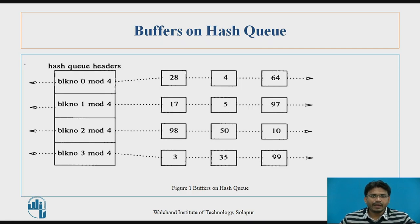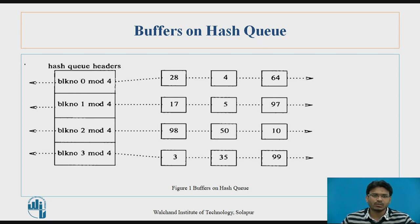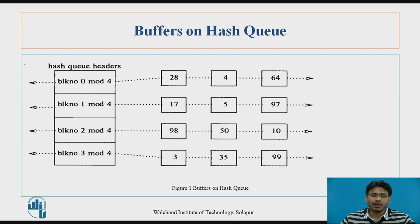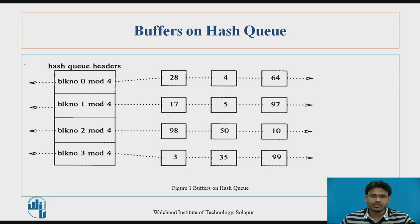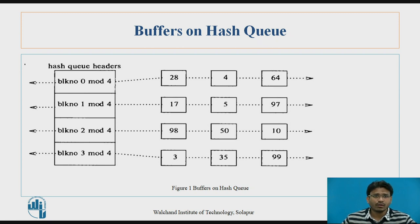We have already explained this diagram in our previous videos. Here we have the hash queue headers with 4 blocks: block number 0, 1, 2, and 3. On the right-hand side we have the buffers with data blocks like 28, 4, 64, 17, 5, 97, 98, 50, 10, 3, 35, and 99 — these are the buffers on the hash queue. To implement this hash queue we use the hash function: block number mod n, where n is the size of the hash queue headers.